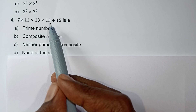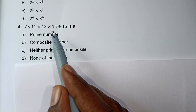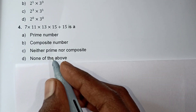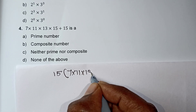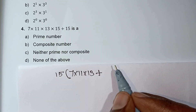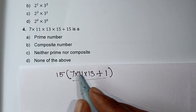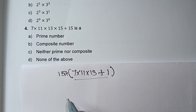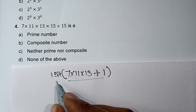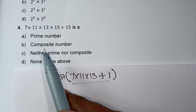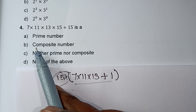The answer is 15. The above number is a multiple of 15, and it is a composite number. A non-prime number divided by its factors — it can be a composite number. This is a composite number.